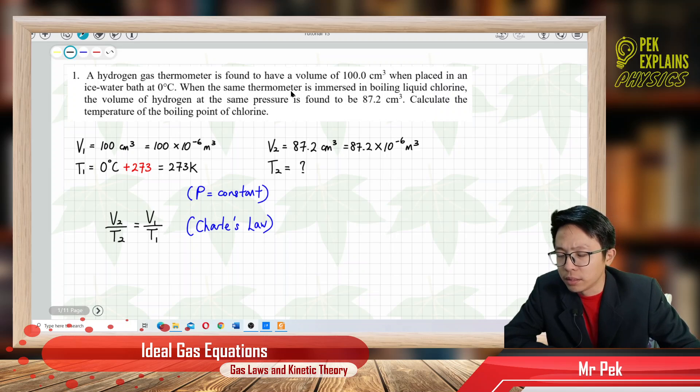When the same thermometer is immersed in a boiling liquid chlorine, the volume of hydrogen at the same pressure is found to be 87.2 cm³. Calculate the temperature of the boiling point of chlorine.